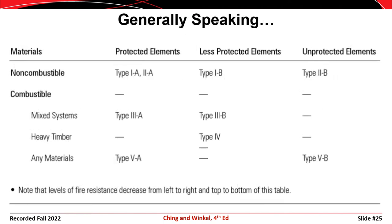This table from the Ching and Winkle text provides a nice summary of the different classifications of construction. As you move from left to right, or from top to bottom, the fire resistance of the structure decreases. As a result, as you move from left to right, or from top to bottom, the restrictions on the height of the structure become more severe.